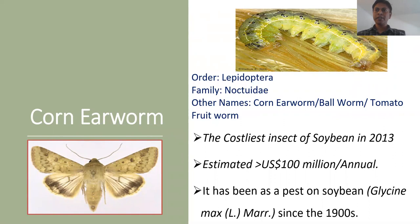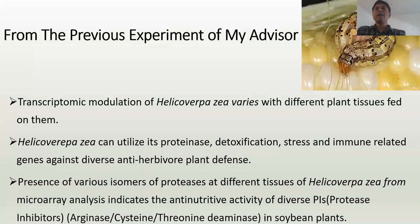First, have a look at my research organism, Helicoverpa zea. It's under the order Lepidoptera, family Noctuidae, and is also known by common names such as corn earworm, bollworm, and tomato fruitworm. It's the costliest insect pest of soybean — in 2013 it caused losses of more than 100 million US dollars per annum, and has been a pest on soybean since the 19th century. I selected soybean because it is an economically important plant.